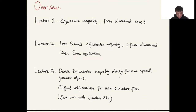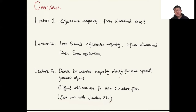These applications concern specific geometric objects coming from calculus of variations problems. In the third lecture, I want to derive the Łojasiewicz Inequality directly for some special geometric objects. In particular, I will discuss a joint work with Jonathan Zhu about showing that the Clifford self-shrinkers for mean curvature flow are locally unique.